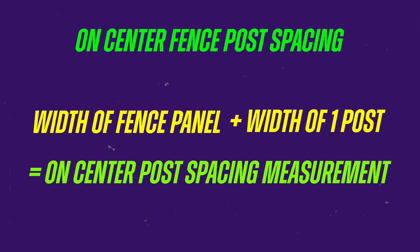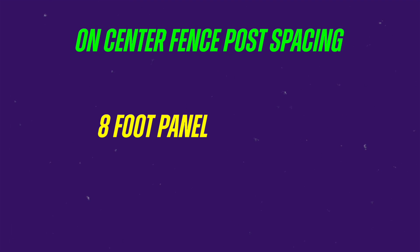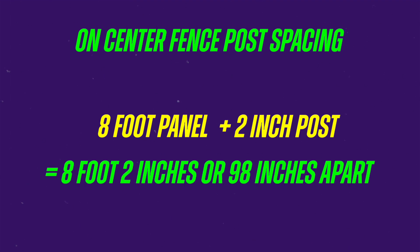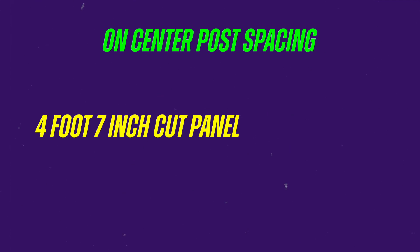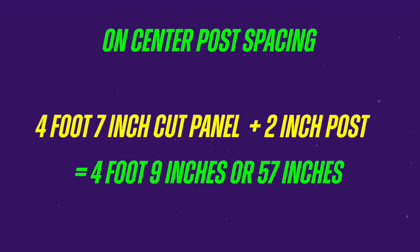For example, if we have a full eight-foot wide panel mounted on two-inch posts, your eight-foot panel plus one two-inch post means the middle of our post holes will be eight foot two inches, or 98 inches apart. This would be the same for a cut fence panel too — if we have a four foot seven inch wide cut fence panel plus one two-inch post, it adds up to an on-center post spacing of four foot nine, or 57 inches.